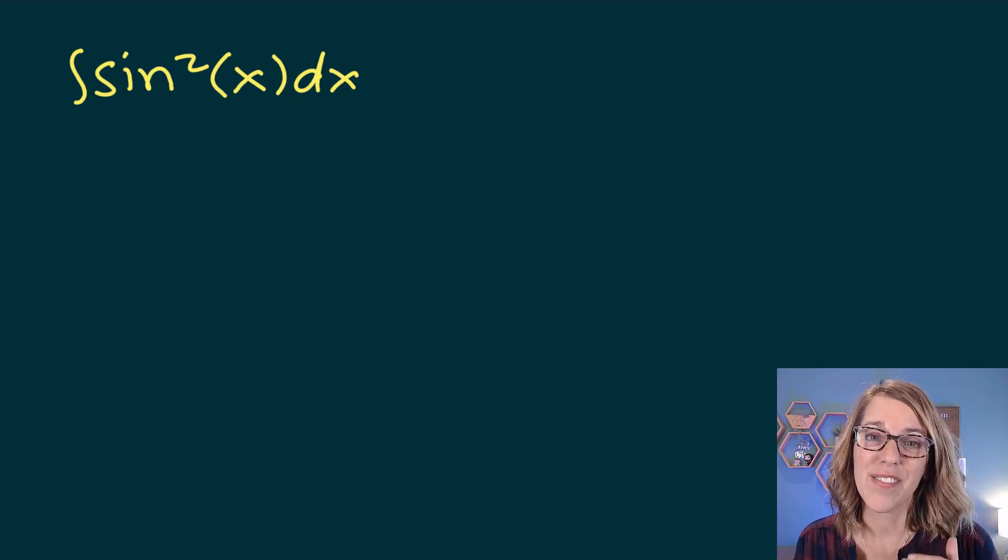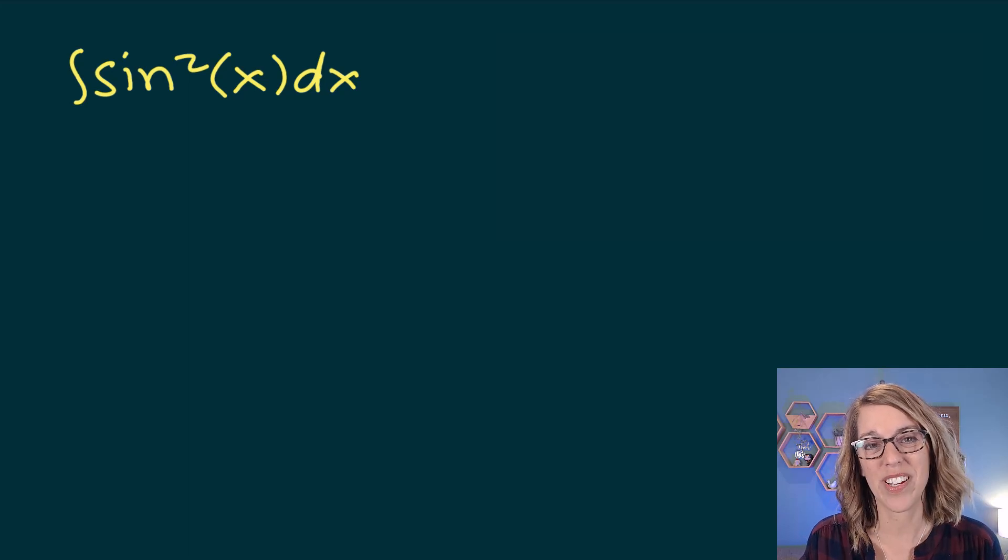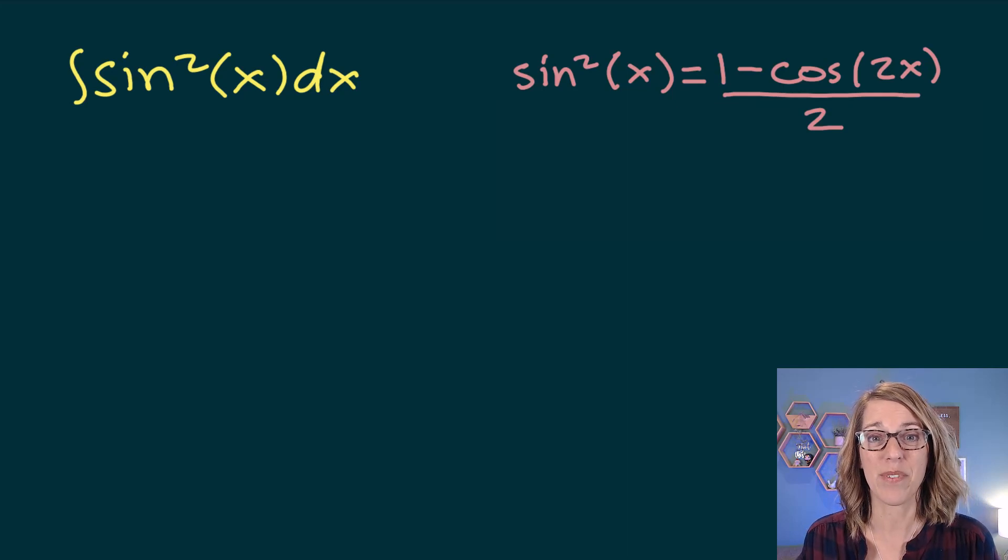We're going to find the integral of sine squared of x dx, and we're going to need a couple of trig identities to do that. The very first trig identity that we need is this power reduction formula for sine squared. There's a similar one for cosine squared.